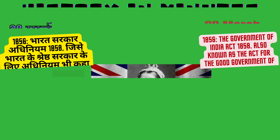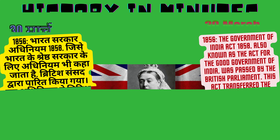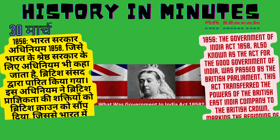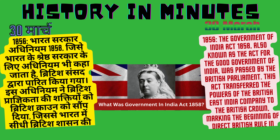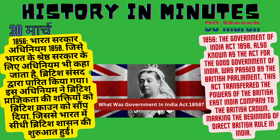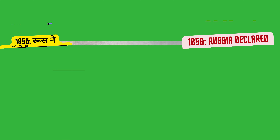1858: World — The Government of India Act 1858, also known as the Act for the Good Government of India, was passed by the British Parliament. This Act transferred the powers of the British East India Company to the British Crown, marking the beginning of direct British rule in India. (Hindi: Bharat Sarkar Adhiniyam 1858 jo Bharat ke shresht sarkar ke liye adhiniyam bhi kaha jata hai, British Sansad dwara parit kiya gaya. Is adhiniyam ne British East India Company ki shaktiyon ko British Crown ko saump diya, jisse Bharat mein seedhi British shasan ki shuruaat hui.)